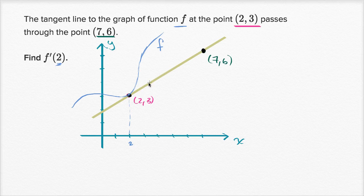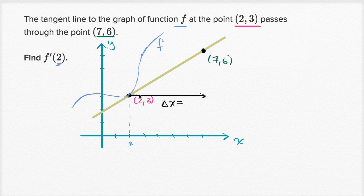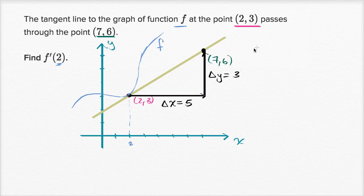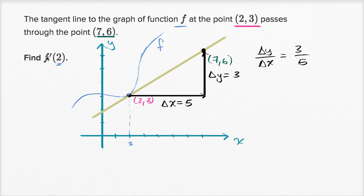So slope is change in y over change in x. To go from two comma three to seven comma six, our change in x is from x equals two to x equals seven, so change in x equals five. Our change in y goes from y equals three to y equals six, so change in y equals three. Therefore, change in y over change in x is three over five, which is the slope of this line — which is the derivative of the function at two, because this is the tangent line at x equals two.